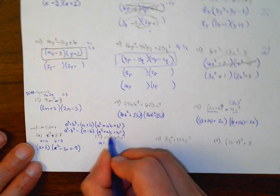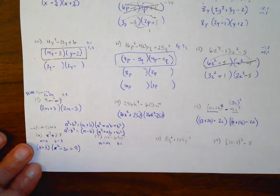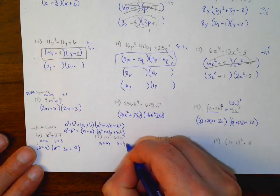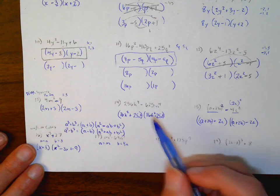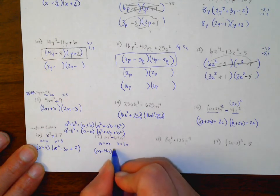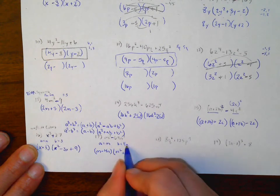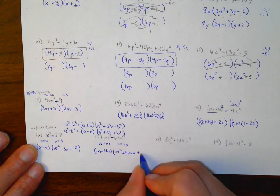Next: m³−64n³. Our a is m. What's being cubed to give 64? 4×4×4=64, and the n part gives us n. Since it's a minus, this fits a³−b³, so it's (m−4n)(m²+4mn+16n²). When I square 4n, that gives 16n².